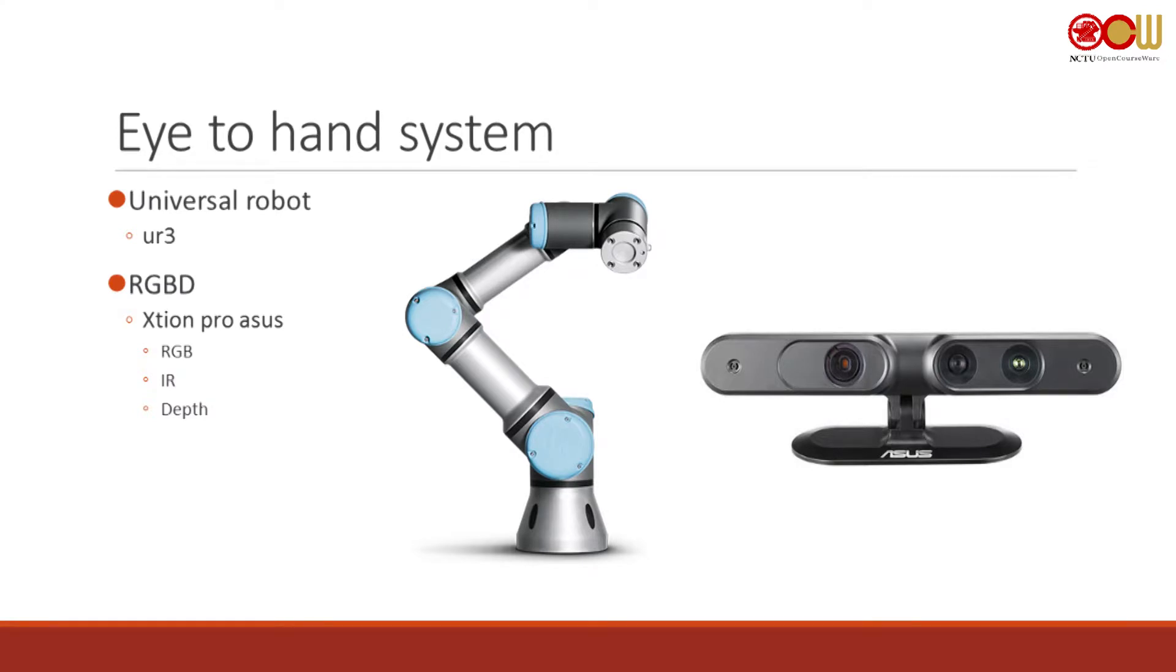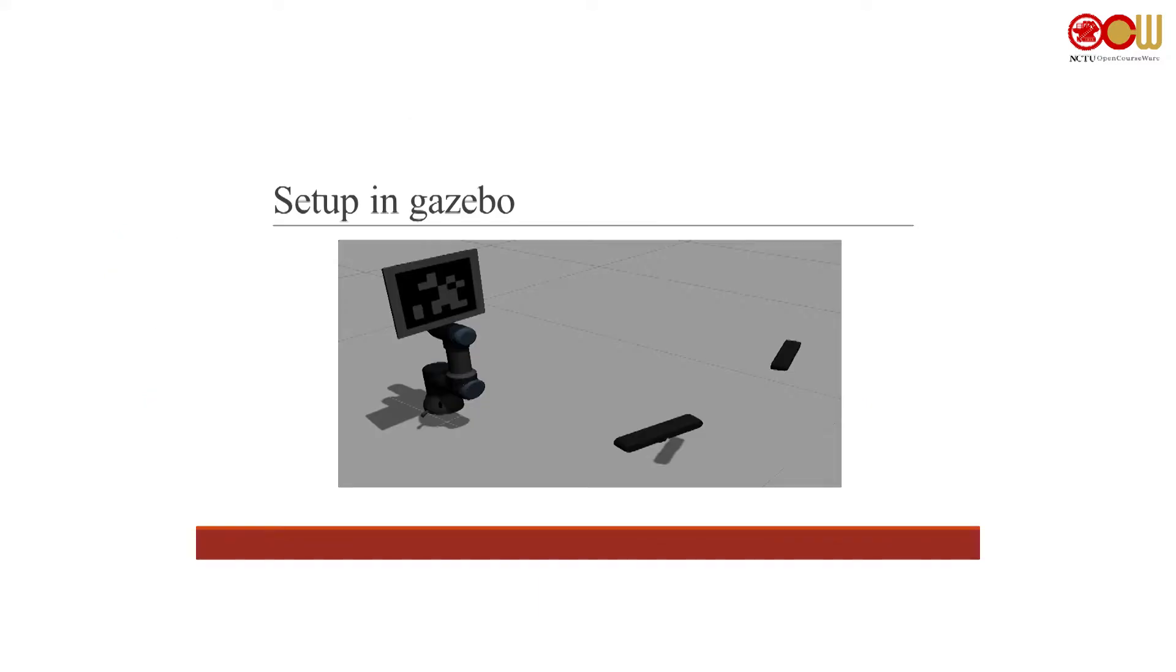And this is the eye-to-hand system. We are using the Universal Robot UR3 and RGBD sensors. This is the setup in Gazebo.